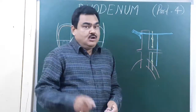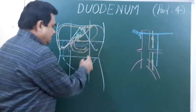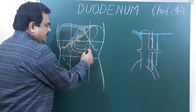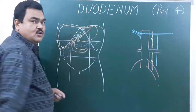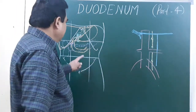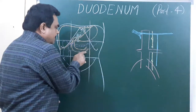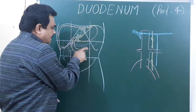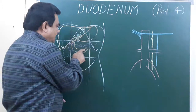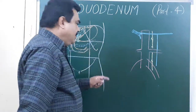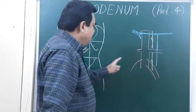We will discuss the fourth part of the duodenum. The length of this part is about 2.5 centimeters. The distal end of this part is movable, while the rest of the part is retroperitoneal — that is why the rest part is fixed.